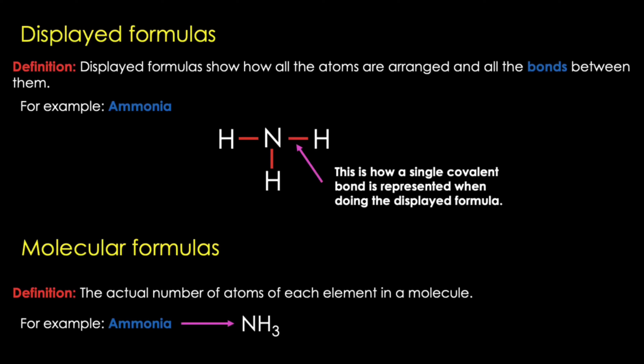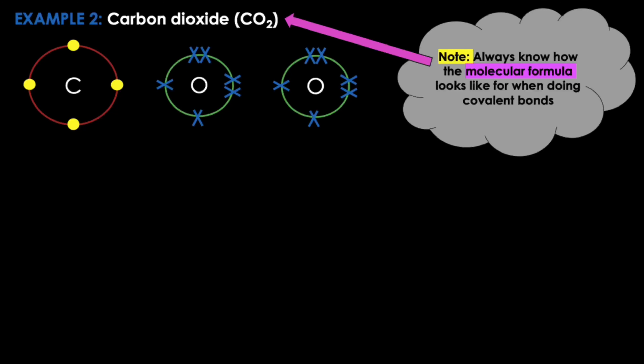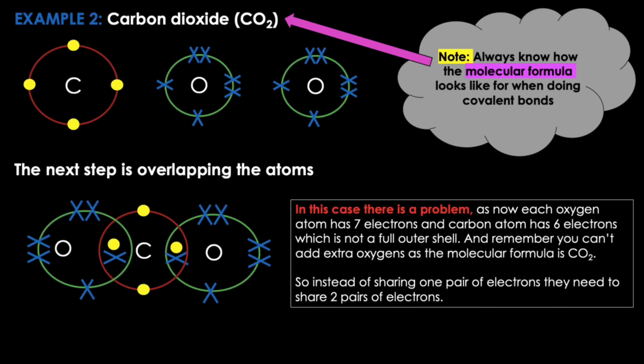Molecular formulas show the actual number of atoms of each element in a molecule. For ammonia it's NH3. The second example is carbon dioxide. Always know how the molecular formula looks when working on covalent bonds. The molecular formula of carbon dioxide is CO2, so there should be one carbon and two oxygens. The next step is overlapping the atoms — carbon in the middle and oxygen on either side, with each oxygen atom sharing a pair of electrons with the carbon atom. But there's a problem: each oxygen atom has seven electrons and the carbon atom has six, which is not a full outer shell. And you can't add extra oxygens as the molecular formula is CO2.